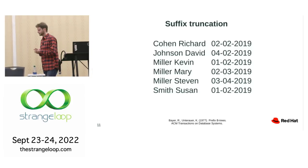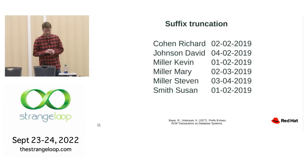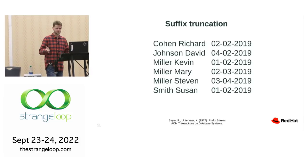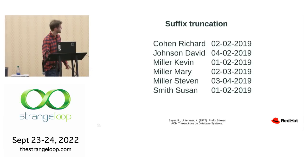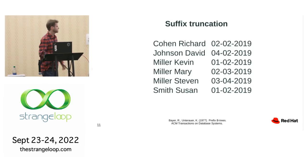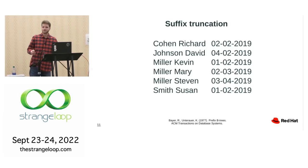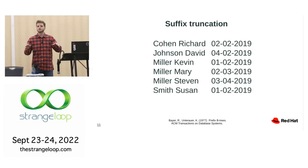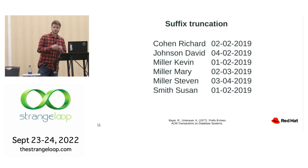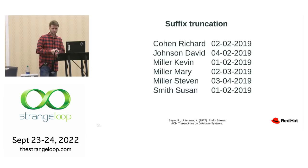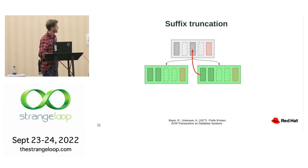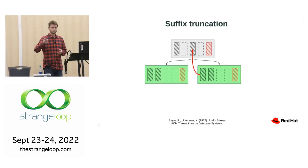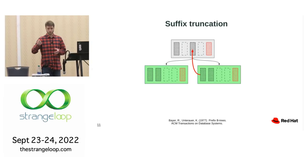Another example of asymmetry: suffix truncation. You might think it should be very similar to prefix truncation, but it's a completely different story. Imagine a page is about to be split. Recall that when we split a page, we promote one extra search key to the parent node. This promoted search key is also overhead — it consumes space in memory.